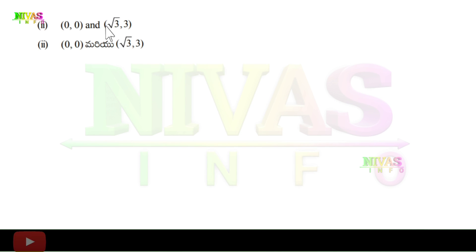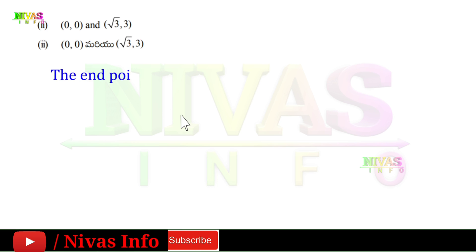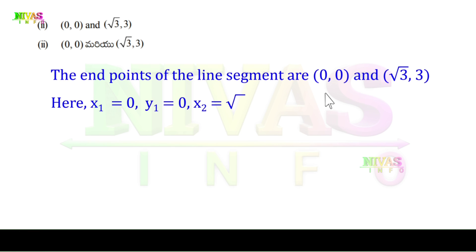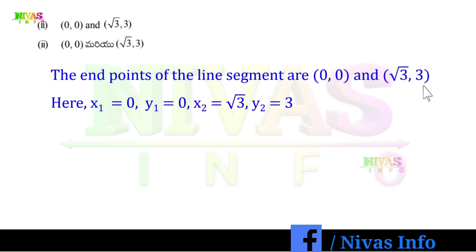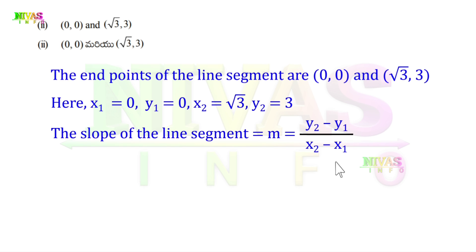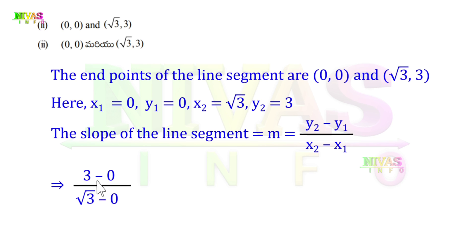Second one: endpoints are (0, 0) and (√3, 3). So here x1 = 0, y1 = 0, x2 = √3, y2 = 3. The slope of the line segment M is equal to (y2 - y1) / (x2 - x1). So y2 = 3, y1 = 0, giving 3 - 0 = 3. And x2 = √3, x1 = 0, giving √3 - 0 = √3.